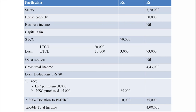We also discussed in previous classes about different kinds of donations — 100% deduction, 50% deduction, 100% qualified, 50% qualified. Donation paid to the Prime Minister National Relief Fund is deductible 100%, so that is 10,000. Total deduction is 35,000, and the remaining taxable income is 4,08,000.